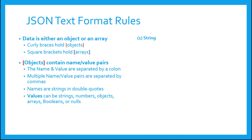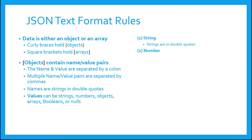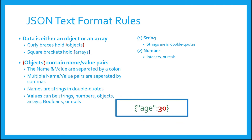The first value type is a string. As we have already seen, a string value type is contained in double quotes. In this example, the name is city and the value is the string cairns. The second value type is a number. Numbers can be integers or reals. Here you see the name is age and its value is an integer, 30. Here you see the name is latitude and its value is negative 16.92.